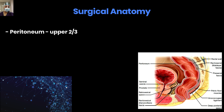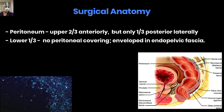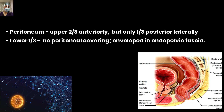We will now briefly discuss the surgical anatomy relevant to APR and ELAPE — figures we have been looking at since our anatomy days. Regarding the peritoneum and the rectum: the rectum is partially intraperitoneal and partially retroperitoneal. The peritoneum covers entirely the upper two-thirds until the pouch of Douglas where it gets reflected, and only one-third posteriorly. The lower one-third has no peritoneal covering and is involved in the endopelvic fascia — this is the most tricky part of the procedure.